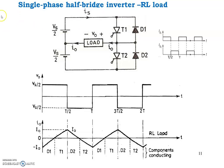If our load is a resistive load, when we turn on T1 the load voltage equals +Vs/2, and when we turn on T2 the load voltage equals -Vs/2. For a resistive load, the output current is in phase with the output voltage. But here our load is resistive-inductive. The inductor does not allow sudden change in current, so there is a lag in the output current. The current takes some time to build up due to the nature of the load.